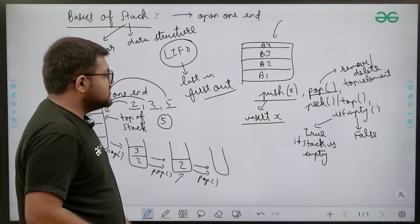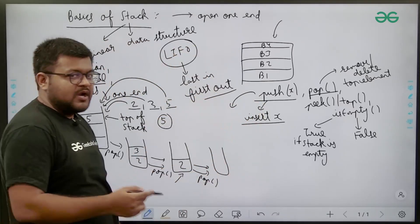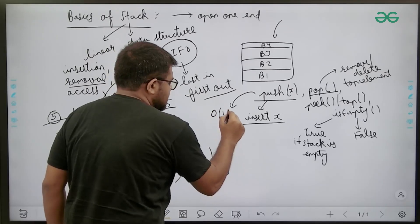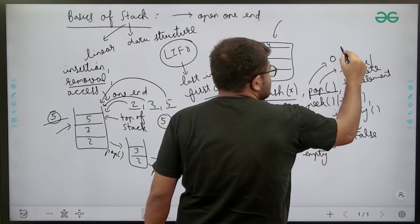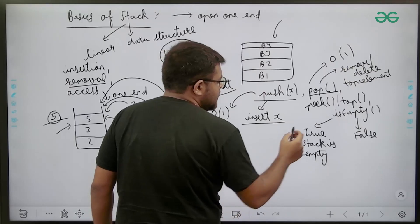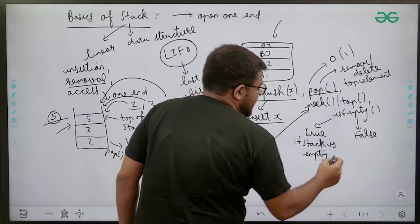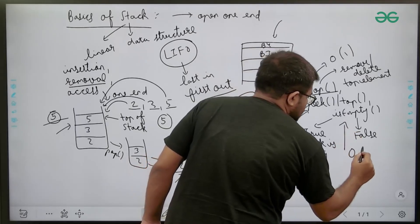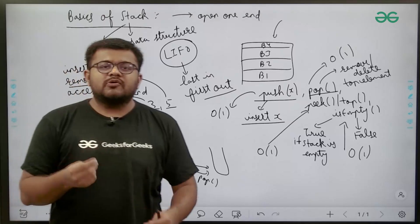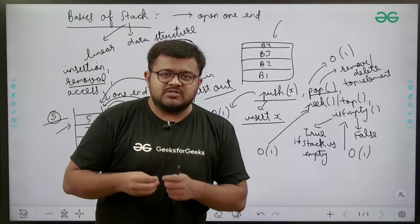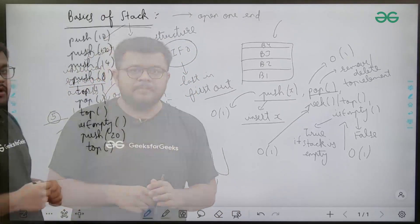What is the time complexity of each function? Pushing an element on the top of the stack takes constant time. Popping an element out of the top also takes constant time. Accessing the top element also takes constant time. And checking whether the stack is empty or not also takes constant time. So this is the basic about the stack data structure. Now let us dry run a few examples and see what exactly is happening.